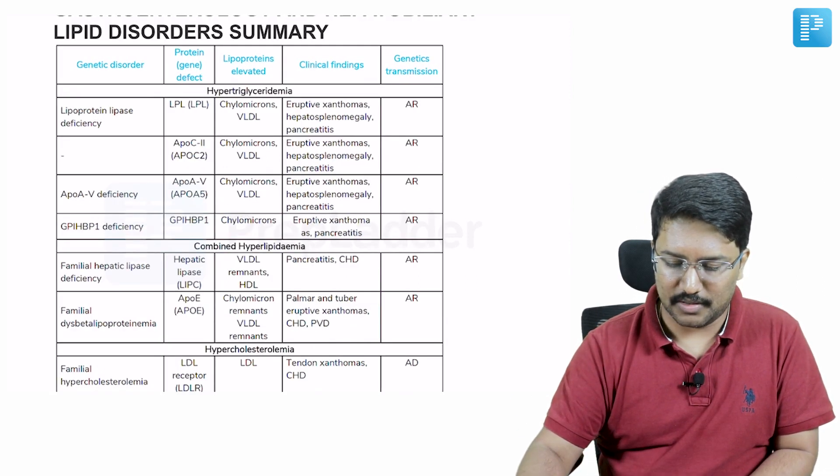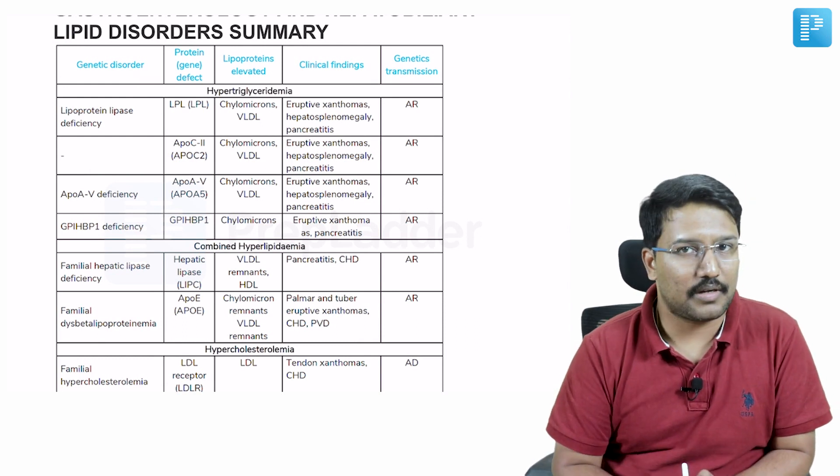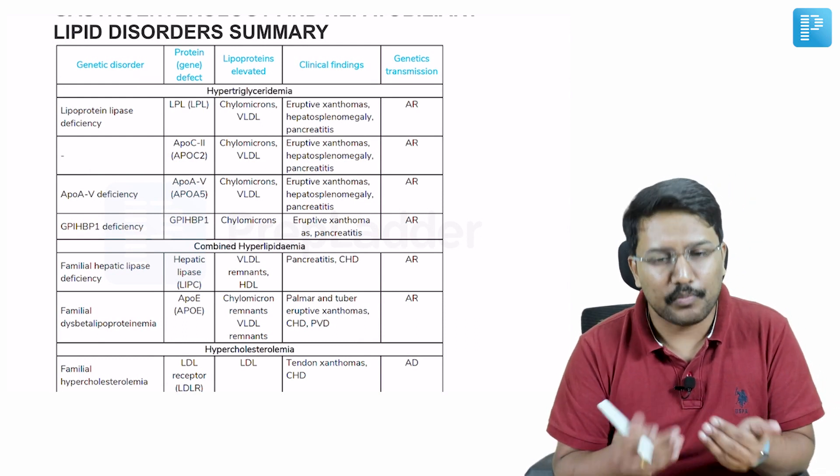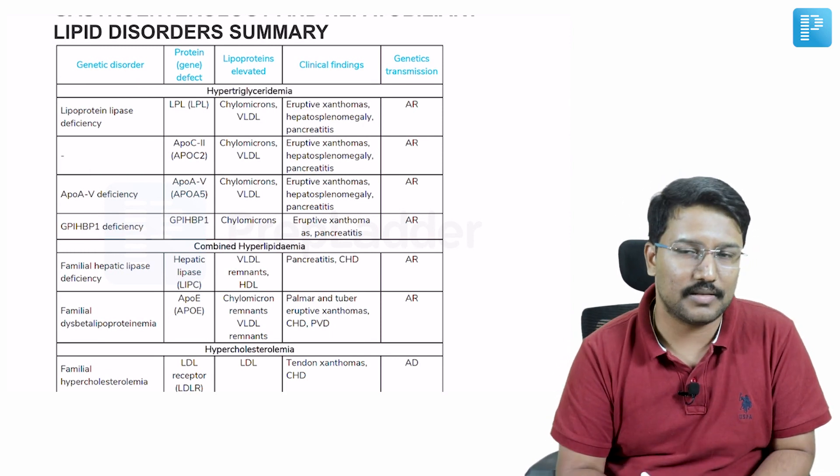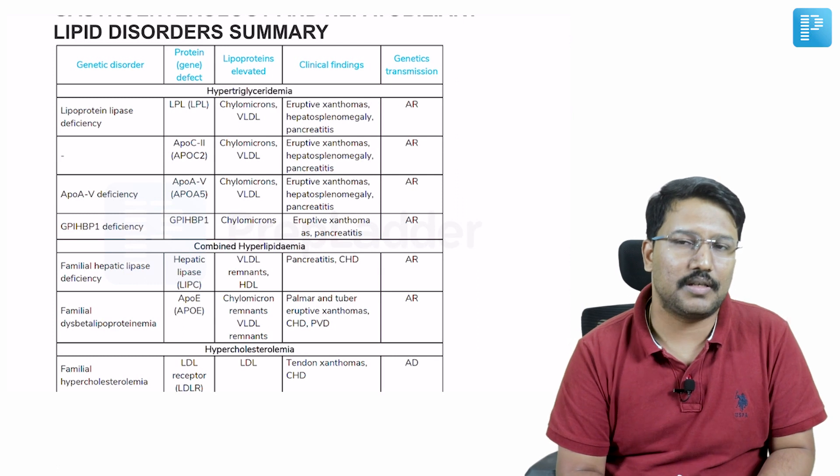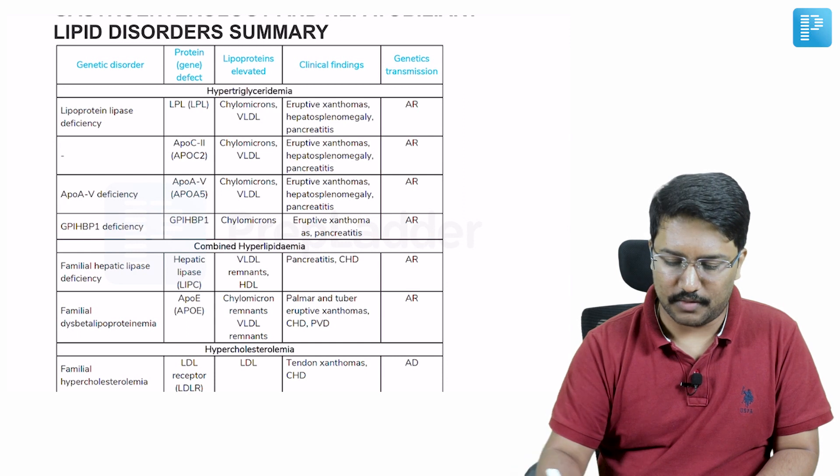In hypertriglyceridemia, there are various enzyme deficiencies which are associated with hypertriglyceridemia, and specific points related to them can be asked as an MCQ. What is the mode of inheritance? What is the enzyme deficiency? In terms of clinical features, what can you anticipate? This table gives you all that you need.